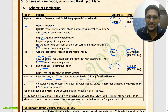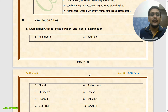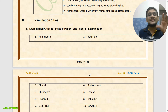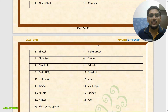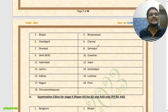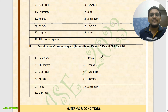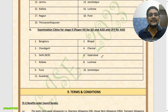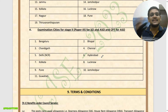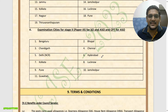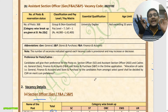Exam centers: for Paper 1 and Paper 2, Ahmedabad, Bangalore, Bhopal, Bhubaneswar — almost every major city is there. A few cities are not included, so you need to choose nearby cities. For Paper 3, fewer exam centers are available. This is the list of exam centers for your reference.